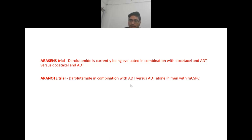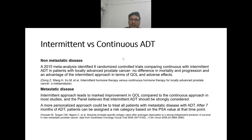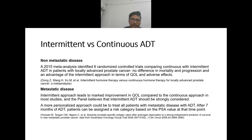In metastatic castration-sensitive prostate cancer, the 2015 meta-analysis of six randomized controlled trials comparing continuous with intermittent ADT in locally advanced prostate cancer found no difference in mortality and progression, but an advantage of the intermittent approach in quality of life and adverse effects. In metastatic disease, intermittent ADT leads to marked improvement in quality of life compared to the continuous approach in most studies, and the NCCN panel believes intermittent ADT should be strongly considered.